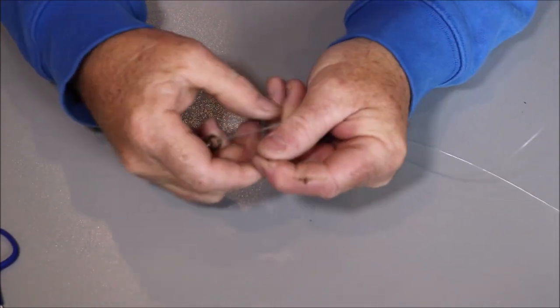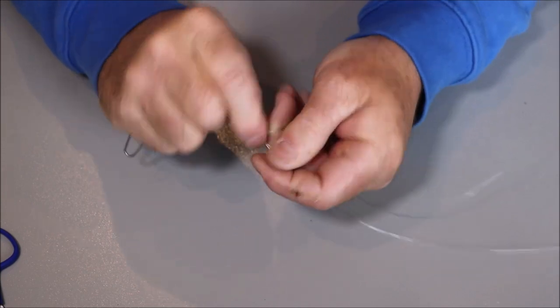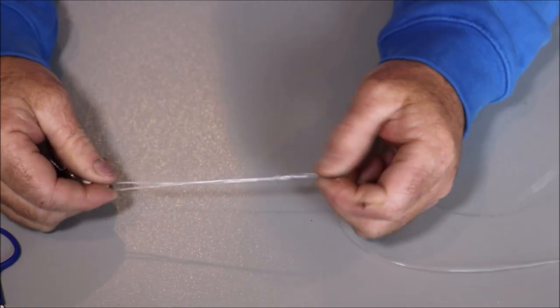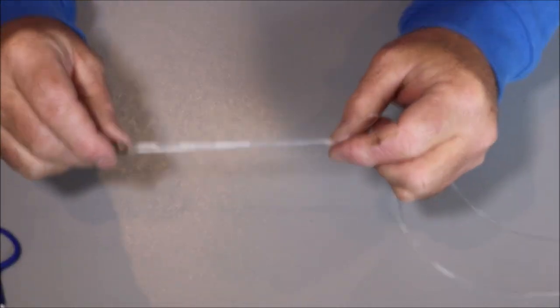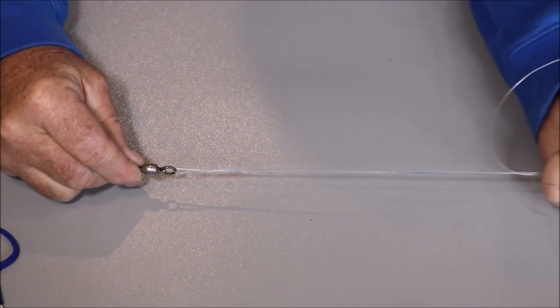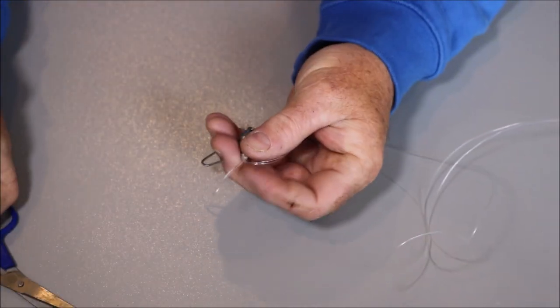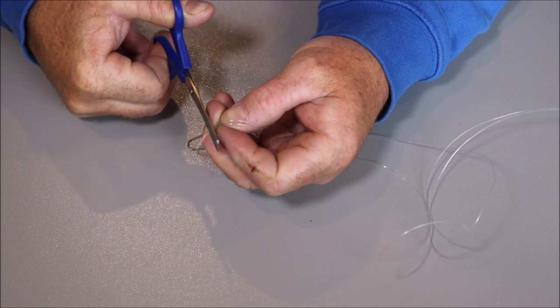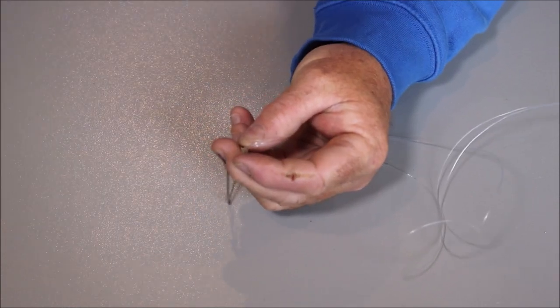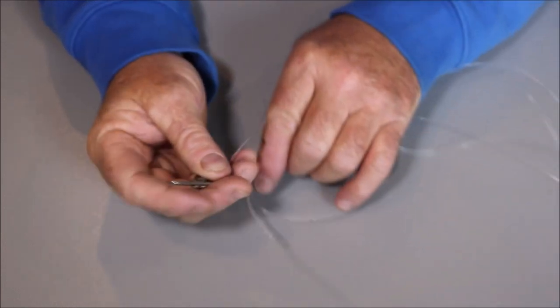Pretty simple. Just tie that on. Like so. Bit of moisture. Slide him down to the top of the swivel. Cut the tag end off. And then that way, you're all set to go.